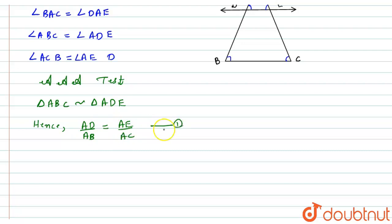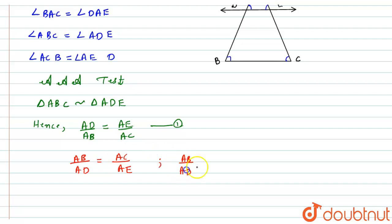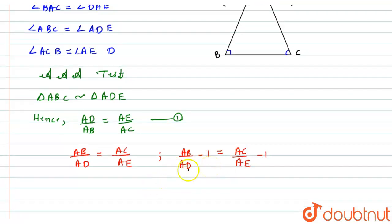Now I will take the reciprocal, so it becomes AB divided by AD equals AC divided by AE. Now I will subtract 1 from both sides, so it becomes AB divided by AD minus 1 equals AC divided by AE minus 1. Taking the denominators as common, it becomes AB minus AD divided by AD equals AC minus AE divided by AE.